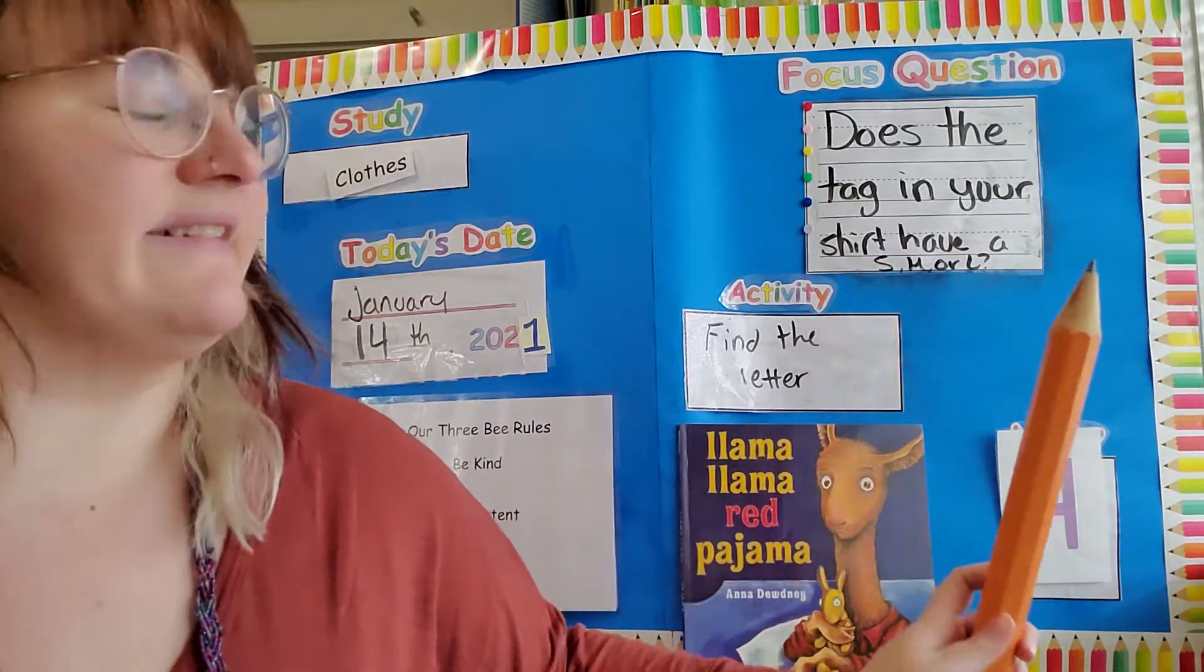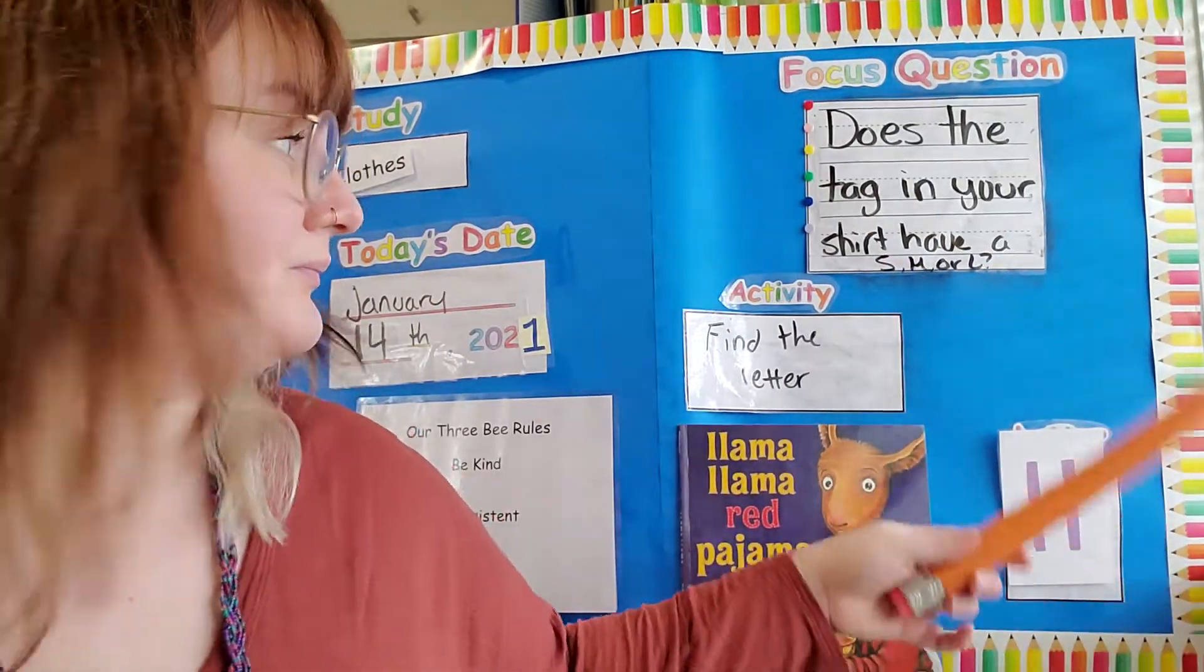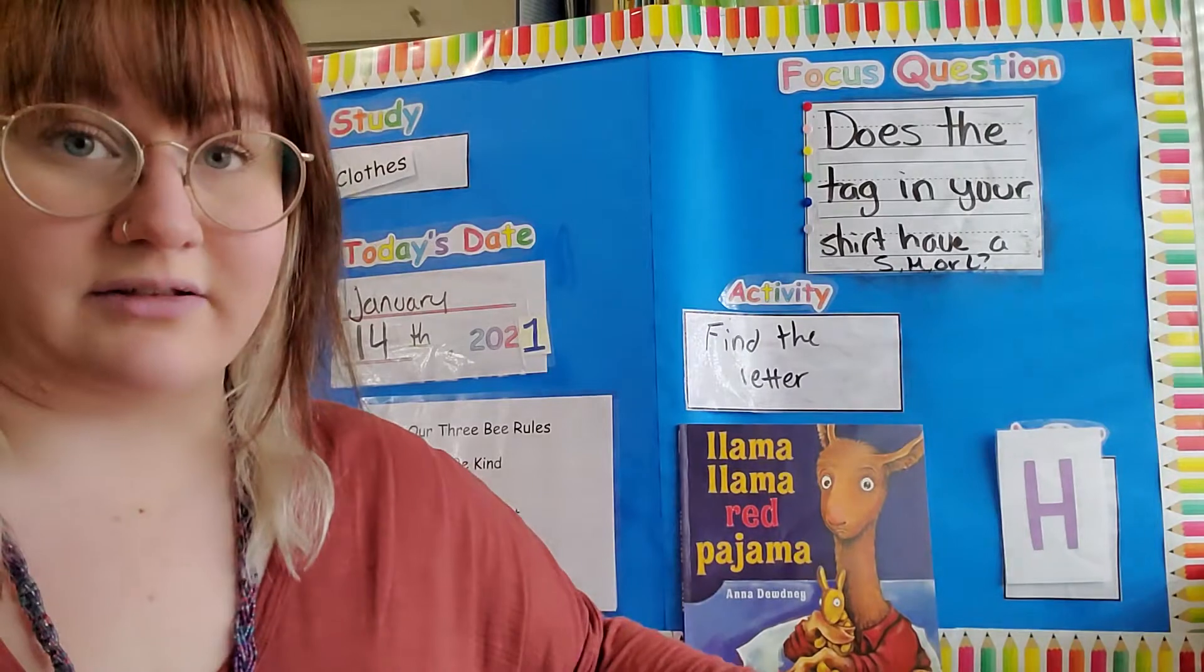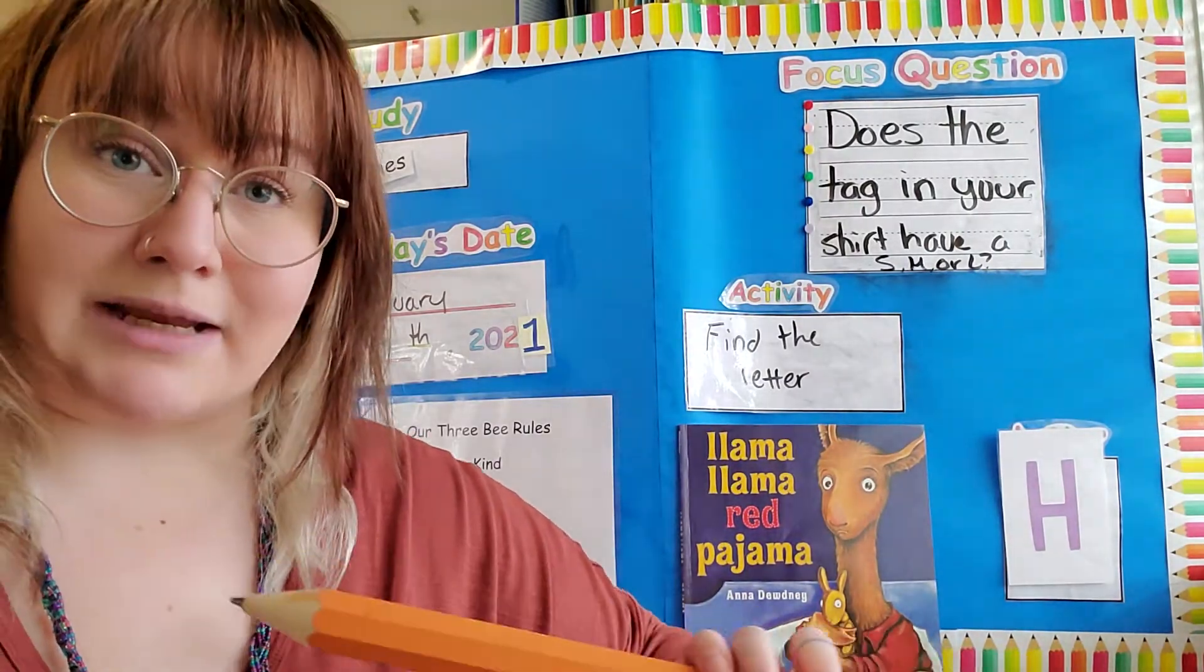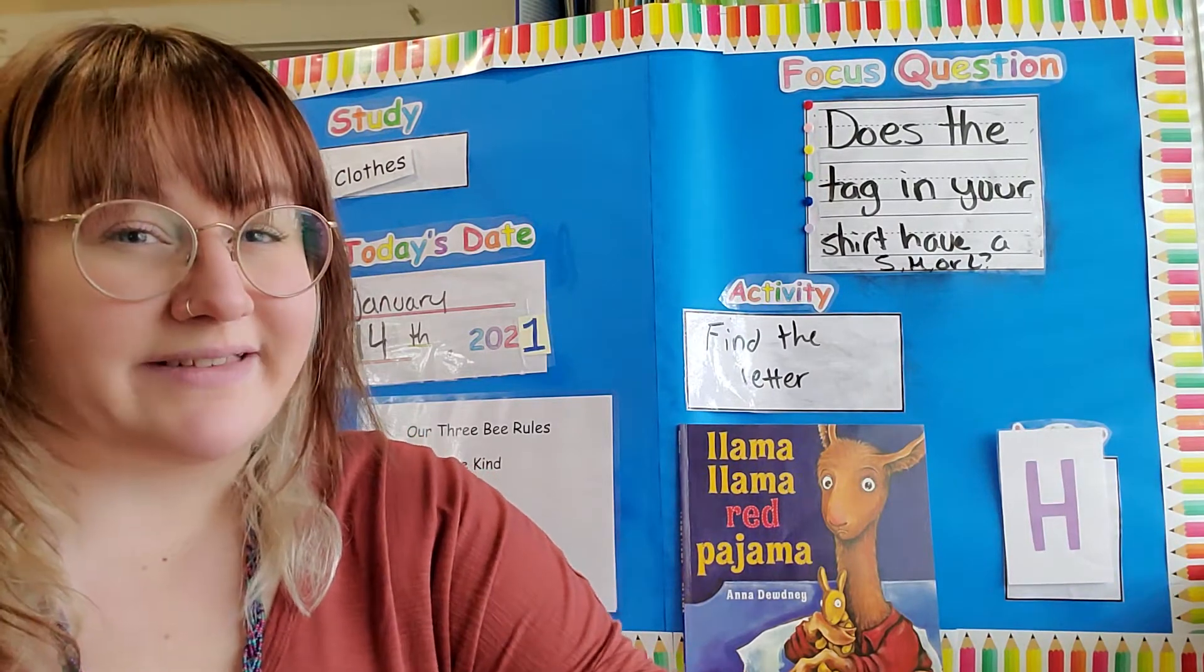So the S means size small. The M is size medium. L is size large. And then XL, like my shirt, is size extra large. So what do you think those sizes mean?